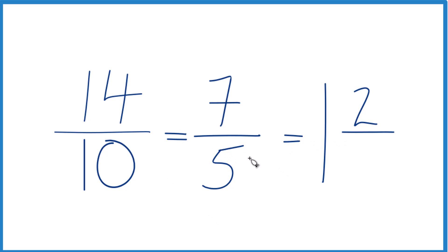And the 5, the denominator, we just keep that the same. So 14/10 as a mixed number is 1 and 2/5, and you can check that.